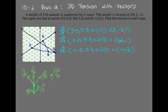We also want to find the magnitude for each of these, because we're going to create a unit vector from each. For SP: 3²+3²+1² = 9+9+1 = 19, so magnitude is √19. For SQ: 0²+2²+1² = 0+4+1 = 5, so magnitude is √5. For SR: 1+9+1 = 11, so magnitude is √11.